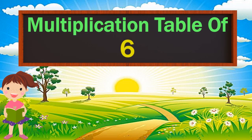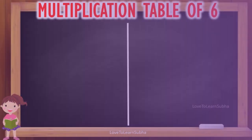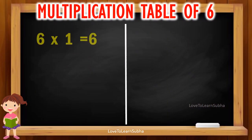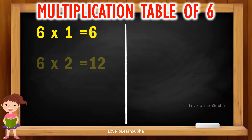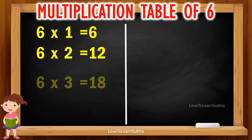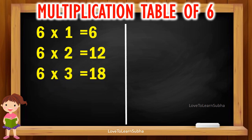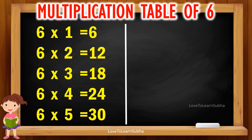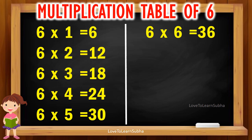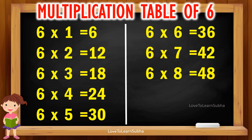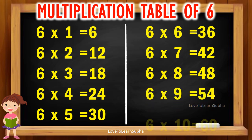Multiplication table of 6. 6 1s are 6, 6 2s are 12, 6 3s are 18, 6 4s are 24, 6 5s are 30, 6 6s are 36, 6 7s are 42, 6 8s are 48, 6 9s are 54, 6 10s are 60.